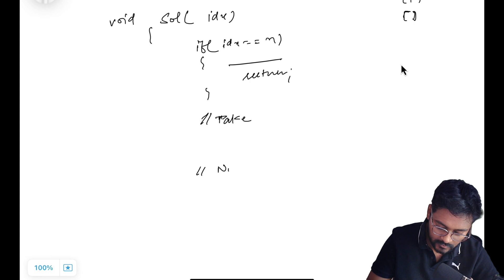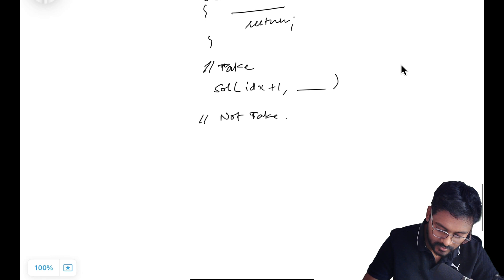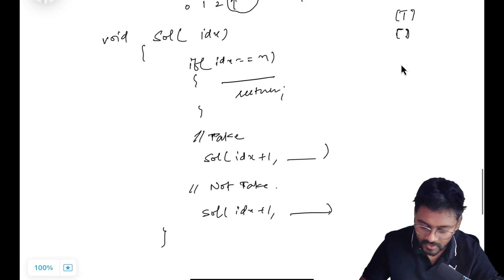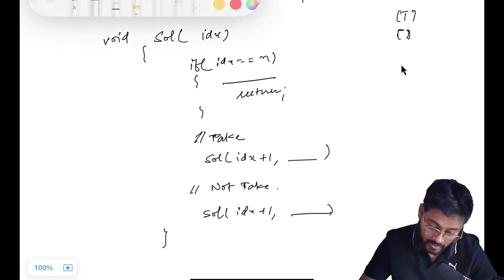Apart from that, we have two possibilities: take or not take. If I am taking it, solution idx plus 1, and I am taking the idx element. Just take that. Otherwise, skip it. Do not take it. That's all we have to do.